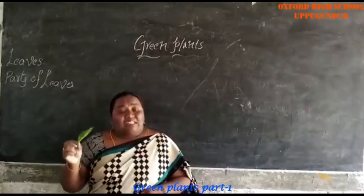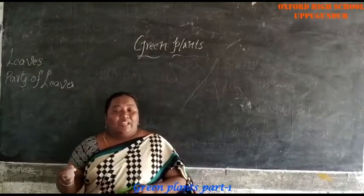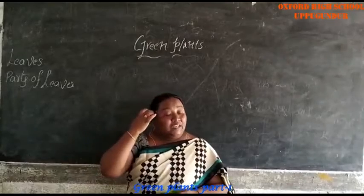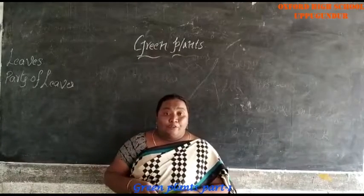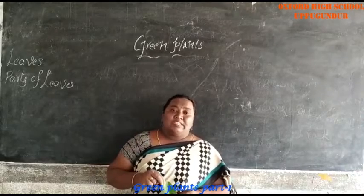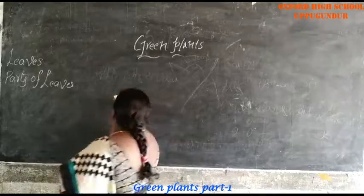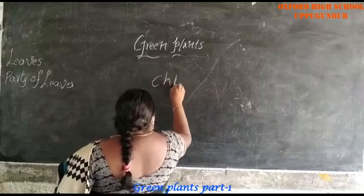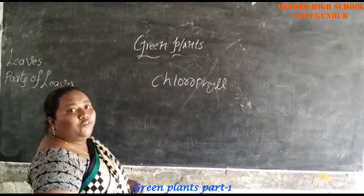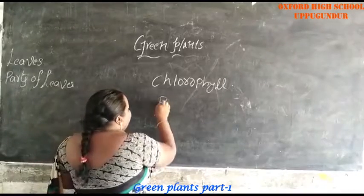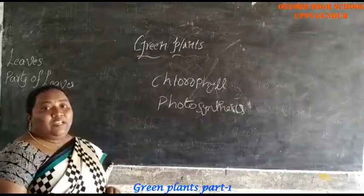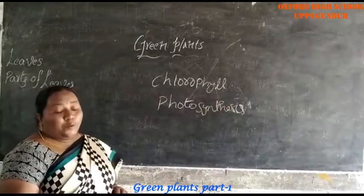Why do all the plants are in green color? Because they prepare their own food. The plants which prepare their own food are generally in green color. How they will prepare their own food? They will prepare their own food by using photosynthesis process. All the plants are in green color due to the presence of chlorophyll pigment.